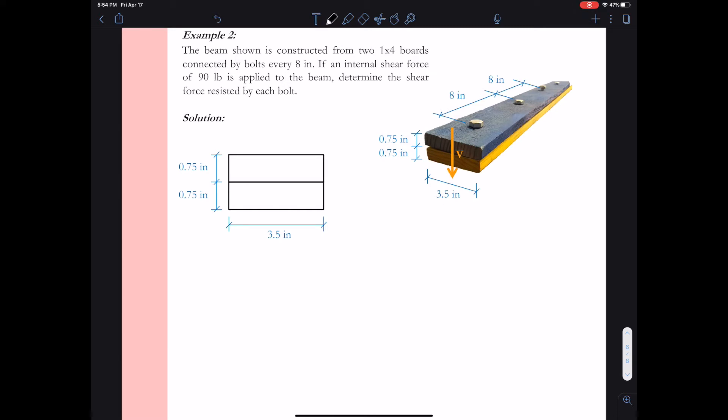So let's look at our example problem. In this example, the beam is constructed with two 1x4 boards. So this is the exact same problem as we saw in the demonstration. We want to figure out if the shear force measures 90 pounds, how do we determine the shear force in each bolt? So we're going to use our new shear flow equation, little q equals VQ over I.